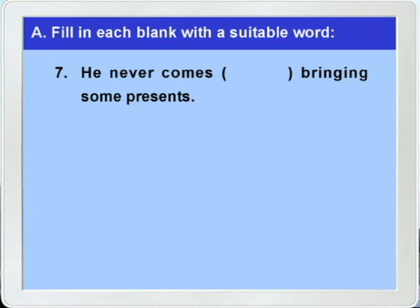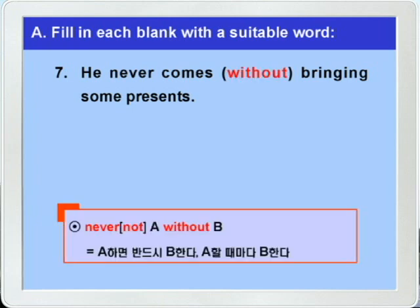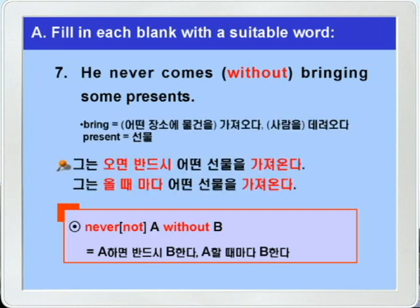문제를 보기만 해도 'Never A without B' 구문이 보이시죠? 정답은 without을 쓰면 되겠습니다. 'Never A without B' 혹은 'Not A without B' 하면 'A하면 반드시 B한다, A할 때마다 B한다' 이런 뜻이 되겠습니다. bring은 '어떤 장소에 물건을 가져오다, 사람을 데려오다' 이런 뜻이죠. present는 명사로 '선물' 이런 뜻이니까, 그는 오면 반드시 어떤 선물을 가져온다, 다시 말해 그는 올 때마다 어떤 선물을 가져온다 이런 뜻이 되겠습니다.